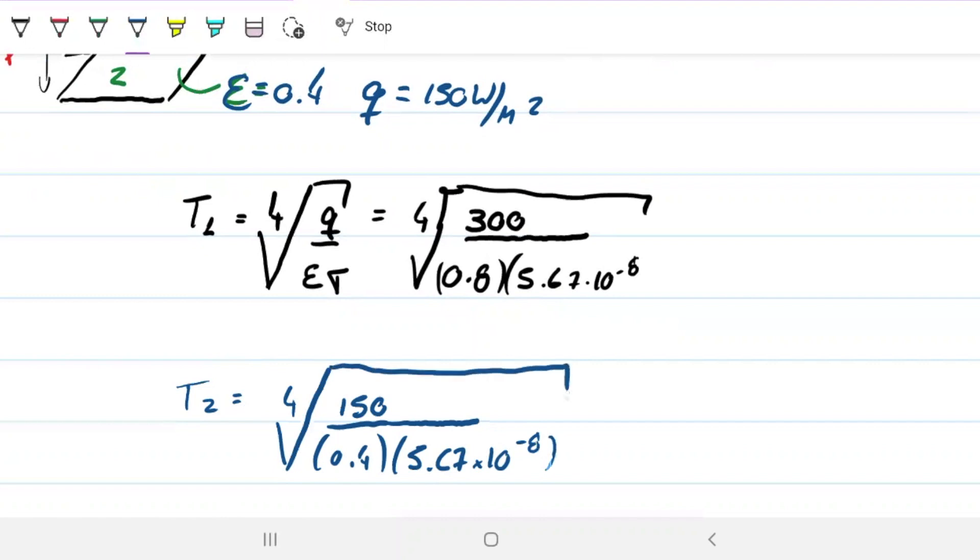And if you guys are fast, you already notice what's going on. Because the ratio between 300 and 0.8 is the same thing as the ratio between 150 and 0.4. This is just literally double that.